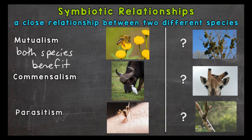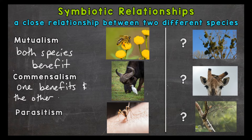Next we have commensalism. Commensalism means that one species benefits and the other is unaffected for the most part — they are not helped or harmed. Basically one benefits and the other doesn't care. For our example we have cattle egrets and any type of grazing animal like a cow, zebra, or even elephants.